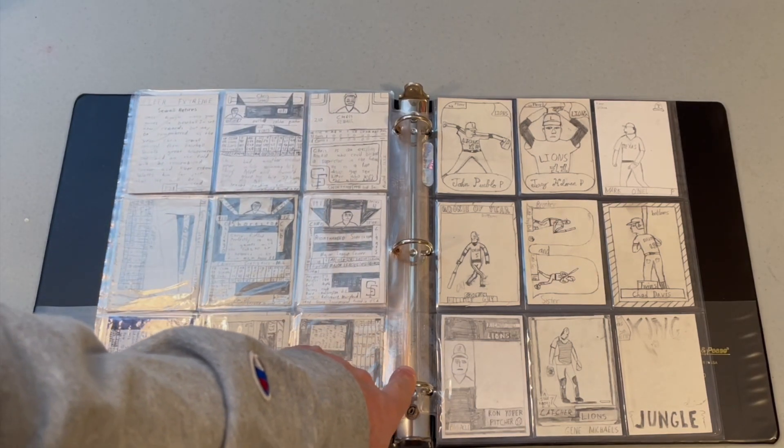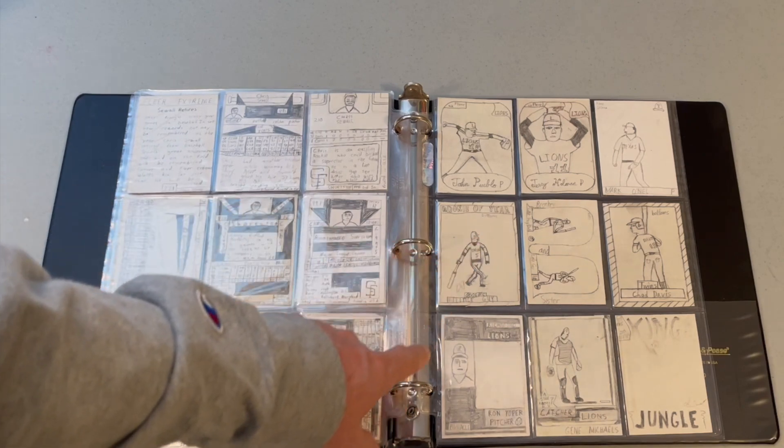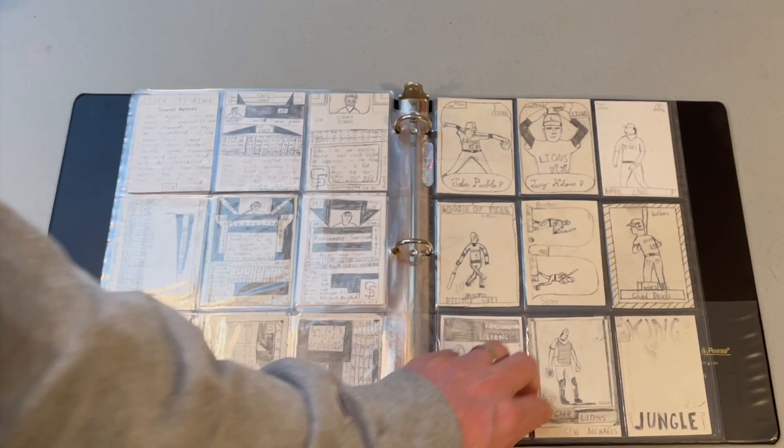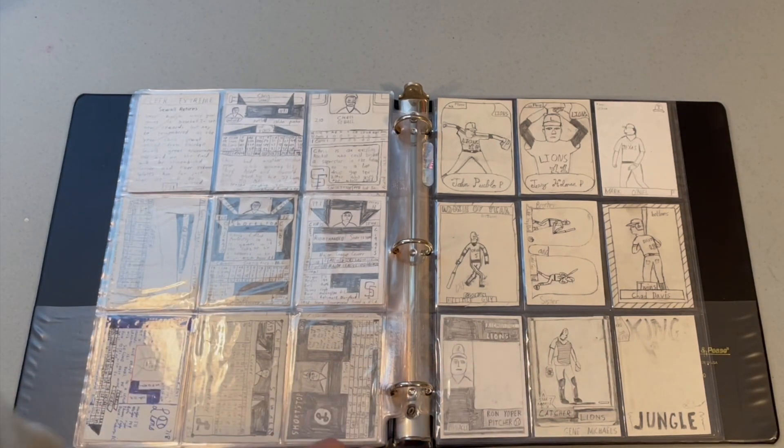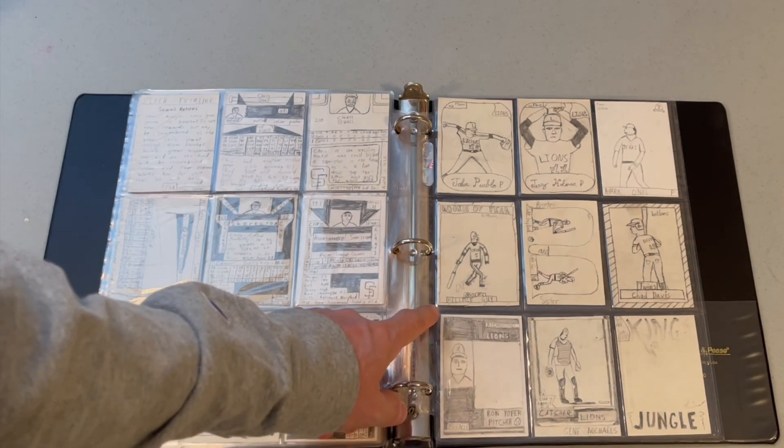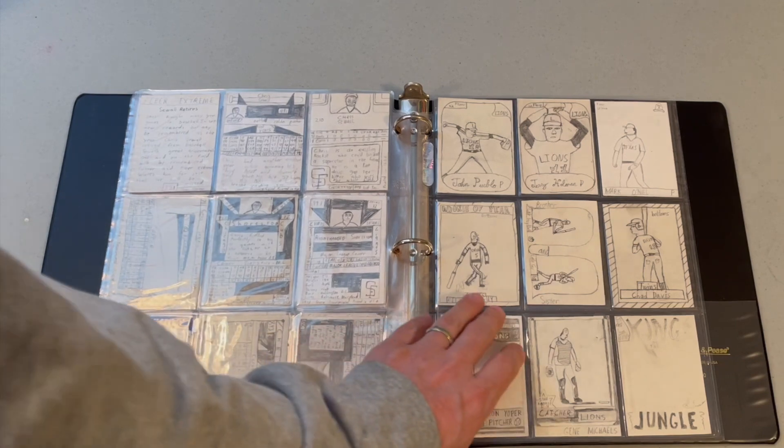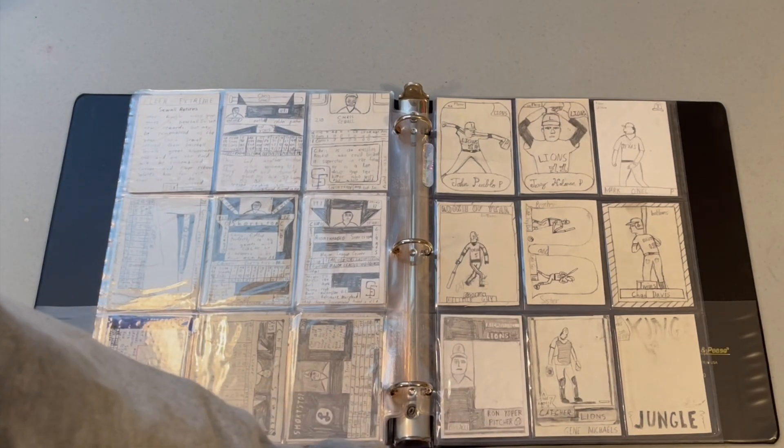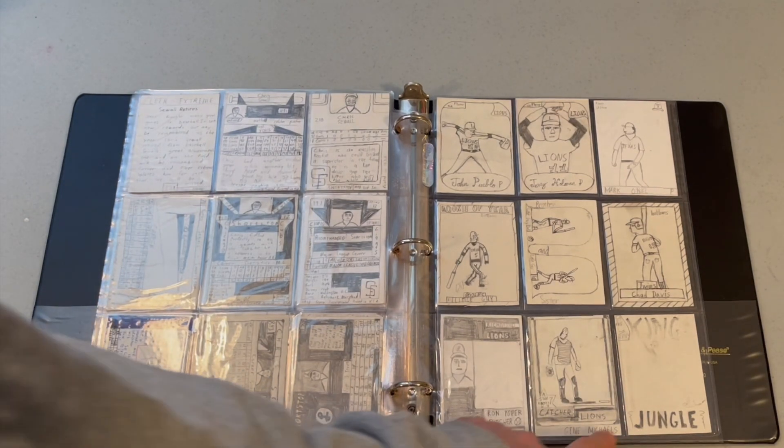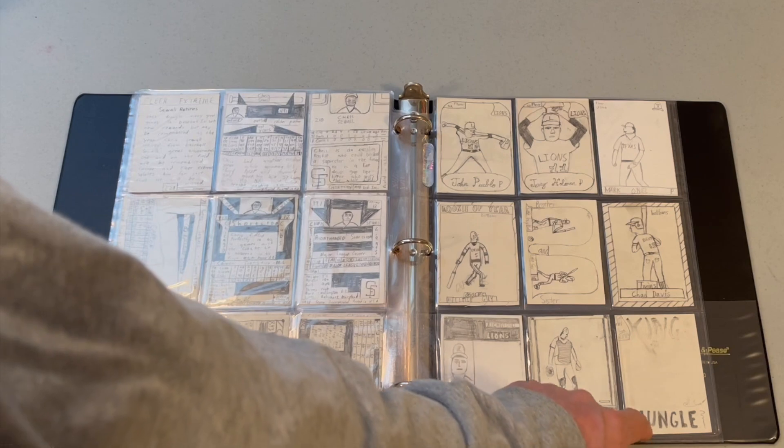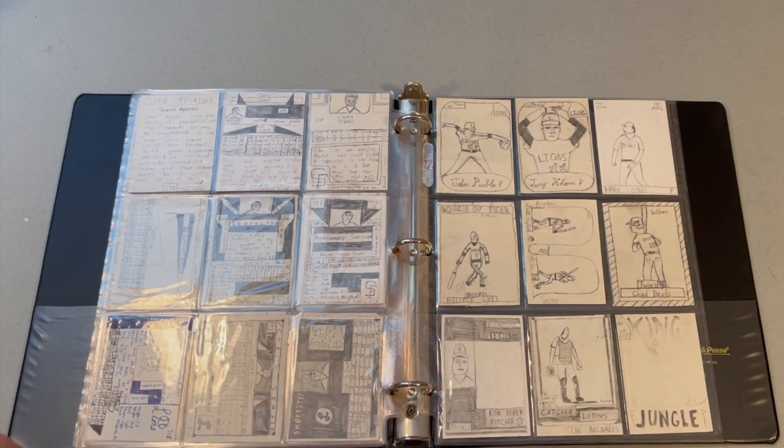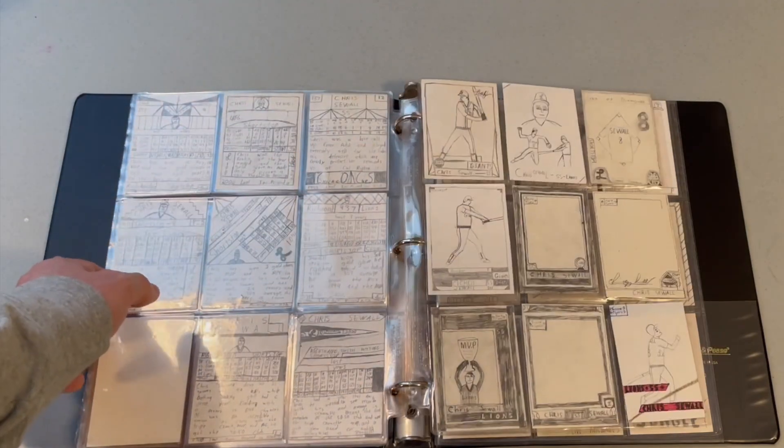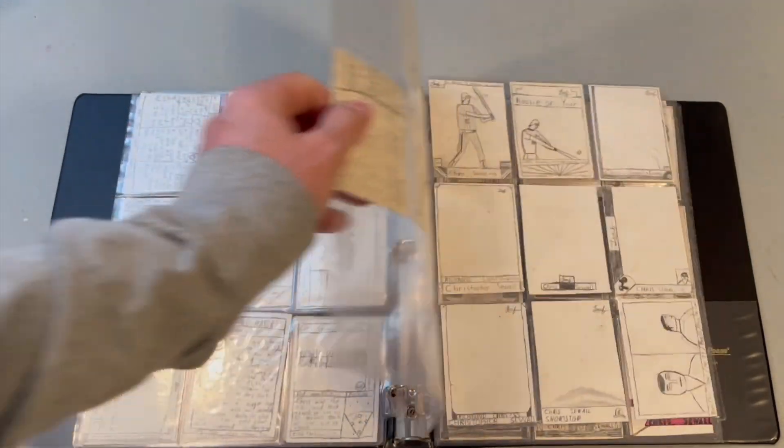This last page here, these actually aren't of me. These are of our teammates, some of our teammates for all those World Series-winning Richmond Lions teams. Chad Davis, he was a good friend of mine. John Pueblo was a pitcher. Gene Michael was our catcher. Mark O'Neill. And Ron Yoper was our closer, apparently. I don't really remember most of these names. Chad Davis I remember because he was a friend, but the other names just seem completely made up. Here's a cool insert card I was making, King of the Jungle. That was going to be an insert card of me as I was the king of the jungle since I played for the Lions there. Very clever.